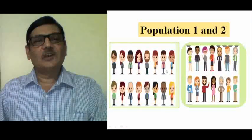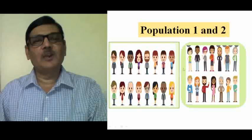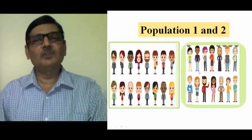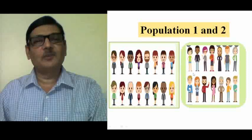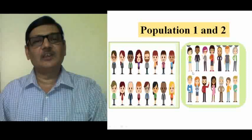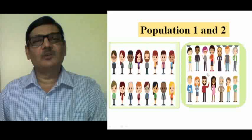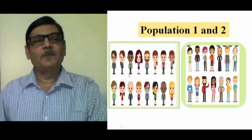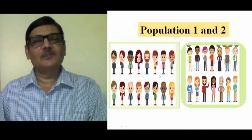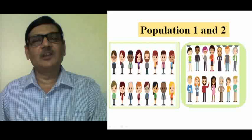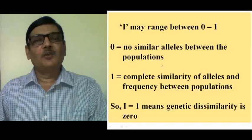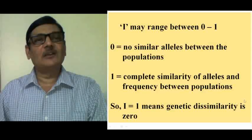Suppose these are two populations, Population 1 and Population 2. Through a cartoon diagram, these are shown as two separate, genetically differentiated populations located in two different geographical areas. We want to know to what extent these two populations are similar to each other, so we calculate the i-value, that is genetic identity.